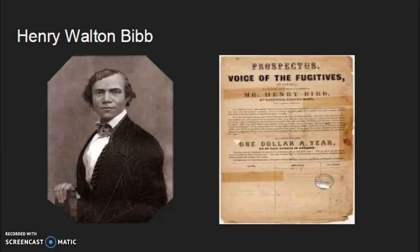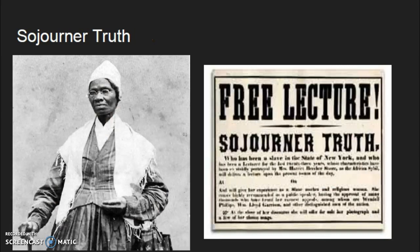Henry Walton Bibb was born on May 10, 1815, in Kentucky. He was enslaved until he escaped from slavery at the age of 15 to Canada. He then came back to the United States to write several books and autobiographies and to be an open abolitionist, writing for the Voice of the Fugitive newspaper.